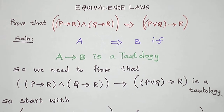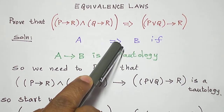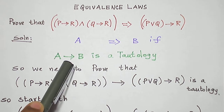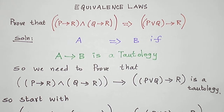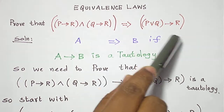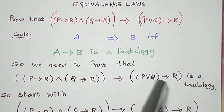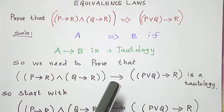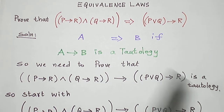First of all, let us see what we are supposed to prove. This is the definition for implication: a statement formula A implies another statement formula B if, when the implication is replaced by a conditional connective A conditional B, the result is a tautology. So if I take the left side as A and the right side as B, when I replace this implication by a conditional connective, that must be a tautology.